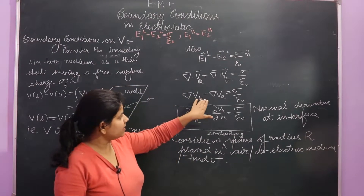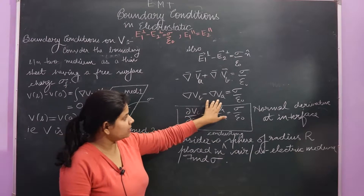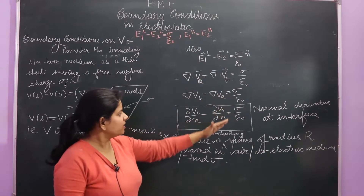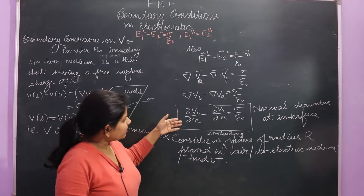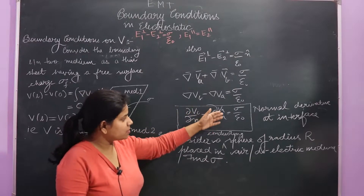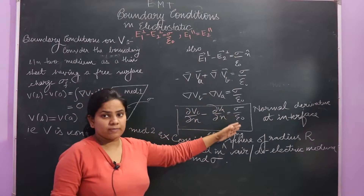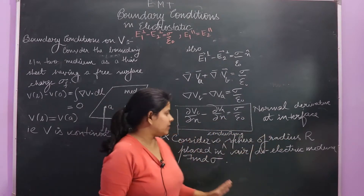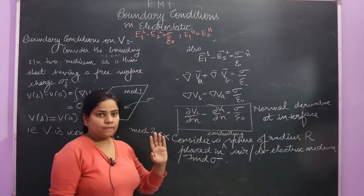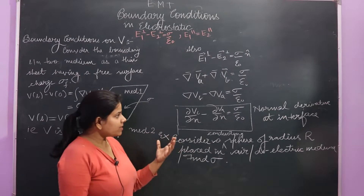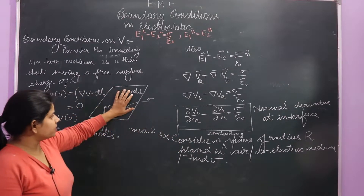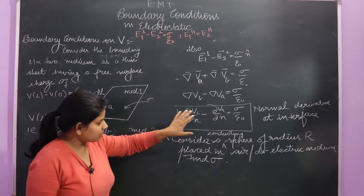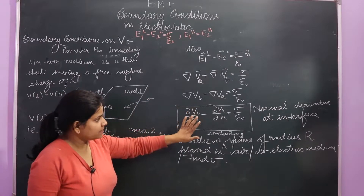Great V_B minus great V_A is equal to σ upon ε₀. This can be written as del V_B upon del N minus del V_A upon del N is equal to σ upon ε₀. This is the normal derivative at the interface. Now let's understand how we can calculate the surface charge density due to this formula.